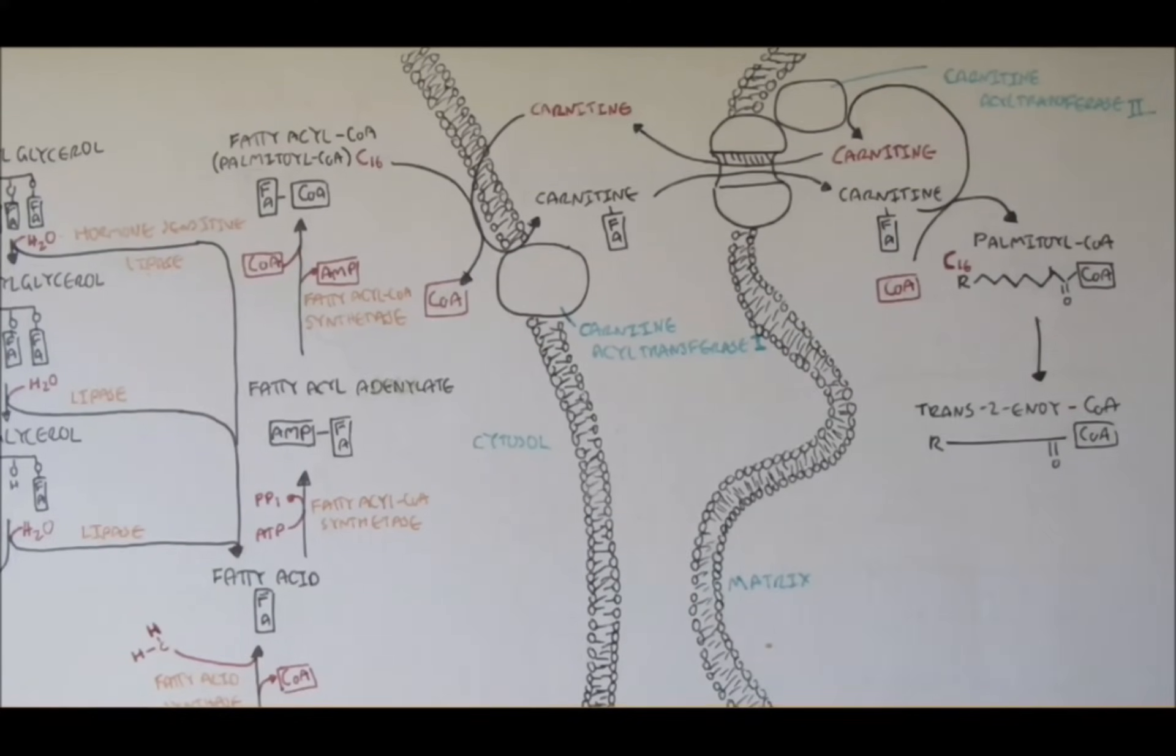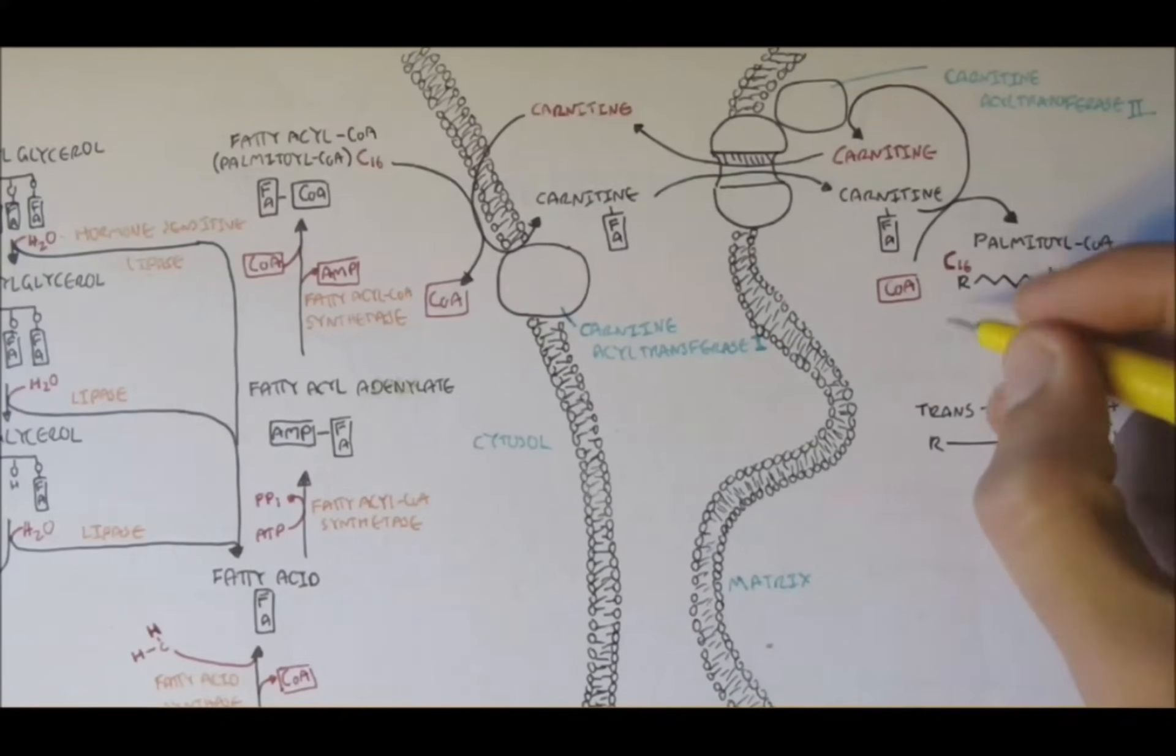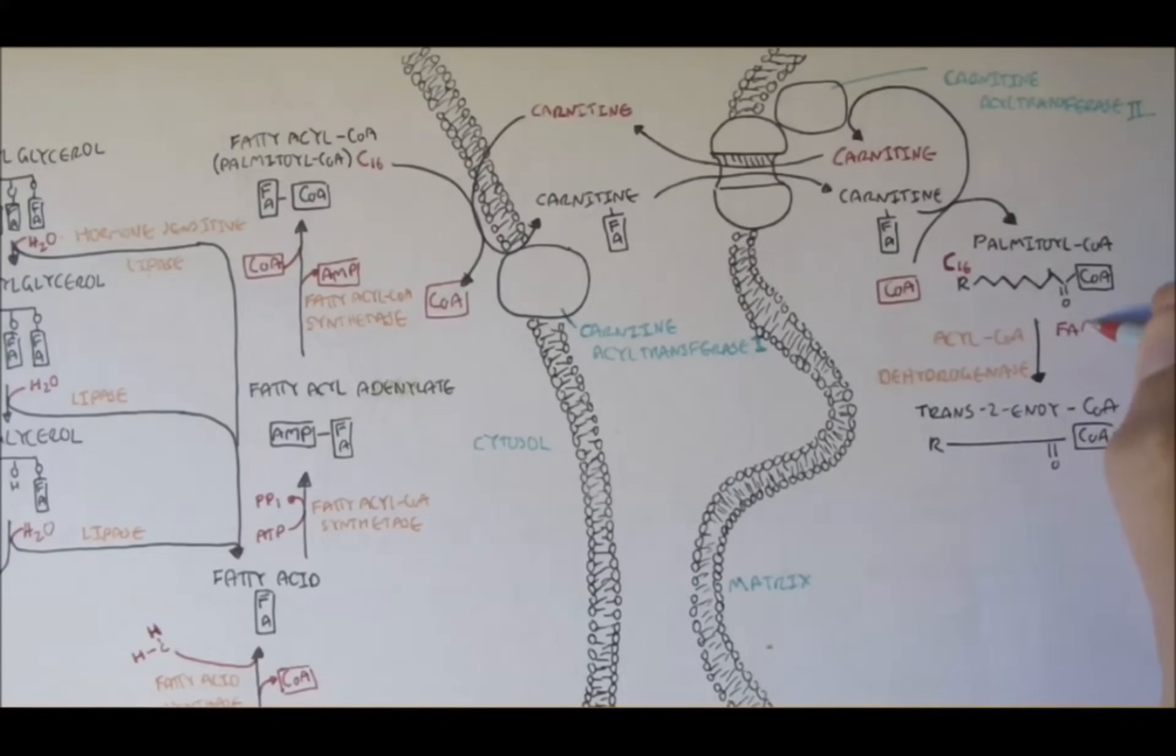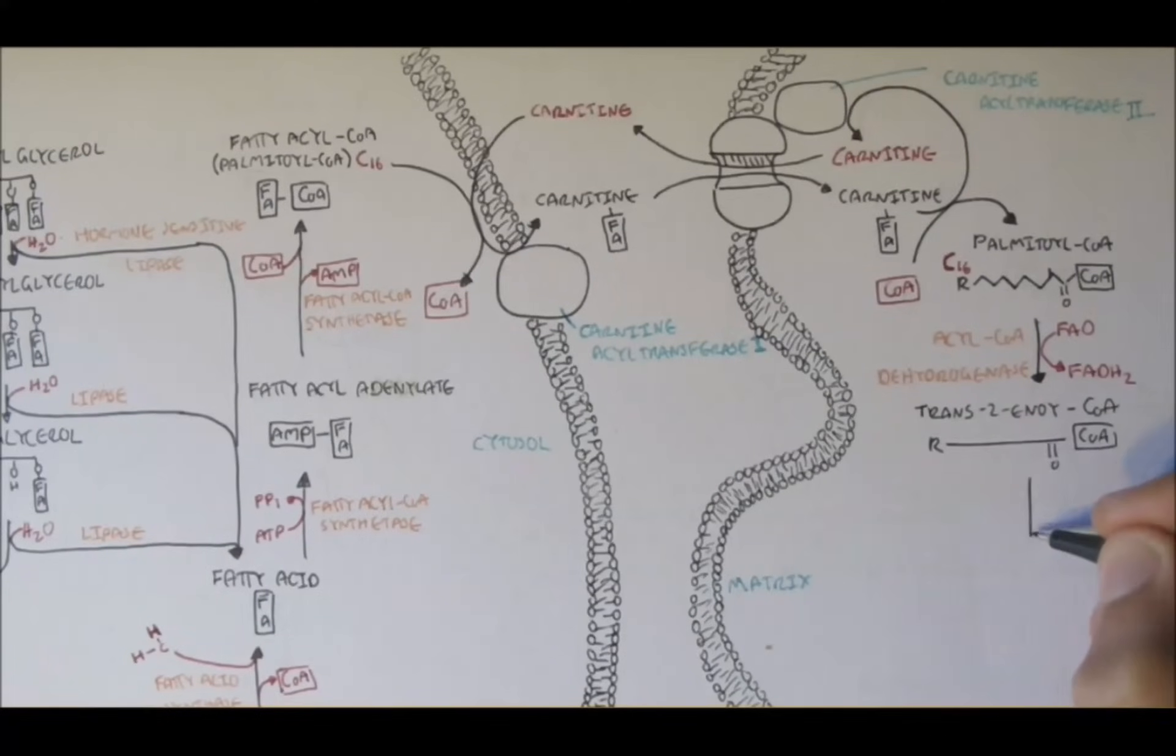So palmitoyl-CoA, it will oxidize first to trans-2-enoyl-CoA by the enzyme acyl-CoA dehydrogenase. FAD is reduced to FADH2.